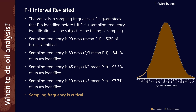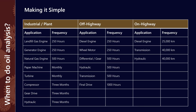Despite the complexity, the industry has some really good rules of thumb for how often we should be sampling, and there's a table that gives a good indication of recommended frequencies. For example, landfill gas engines have really short oil drain intervals, so really regular sampling is recommended — about once every 10 days if operating all day. On the other hand, gear drives and hydraulics, maybe once every three months is okay.